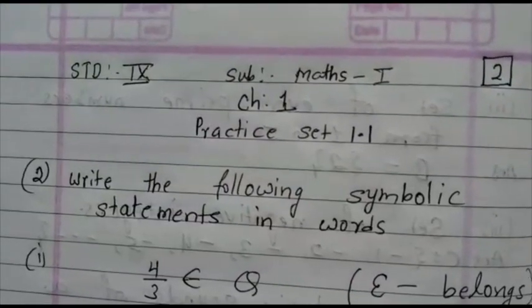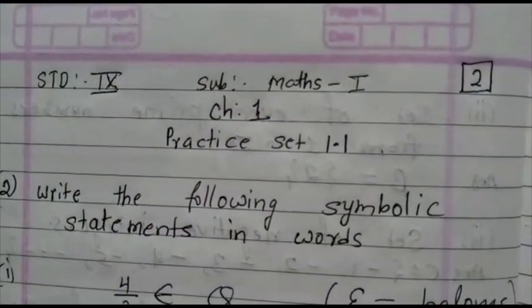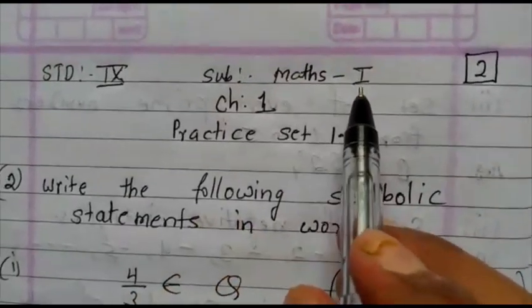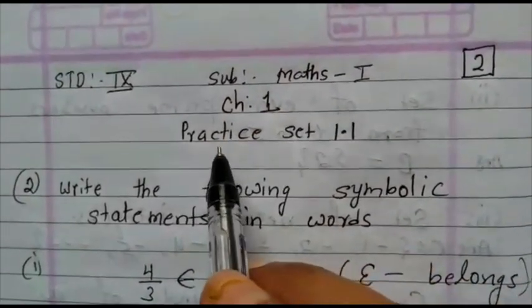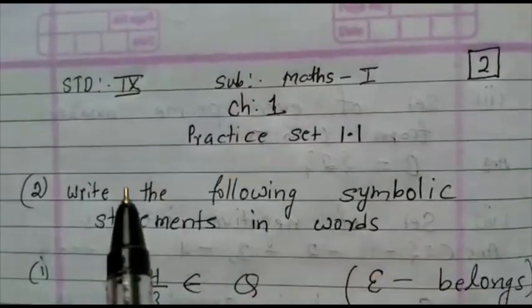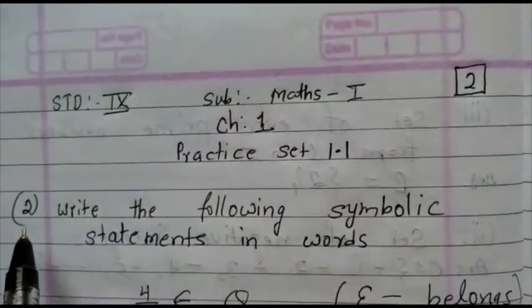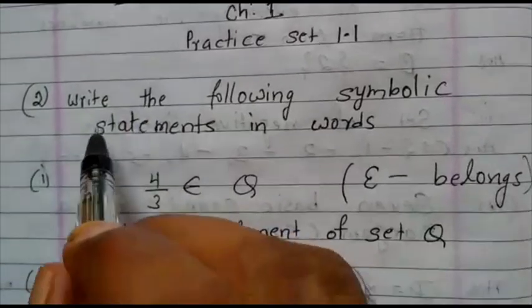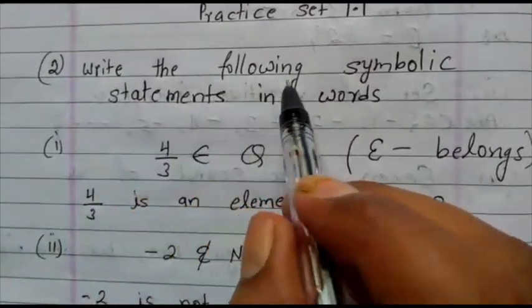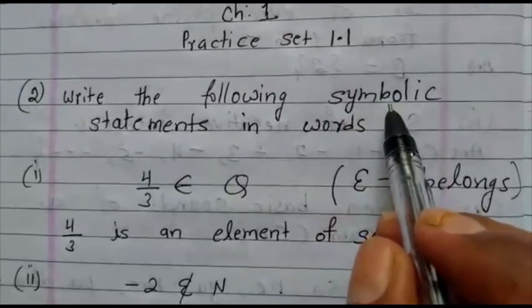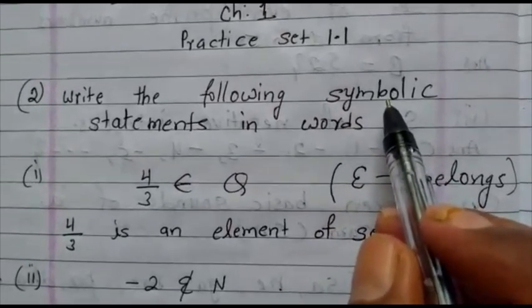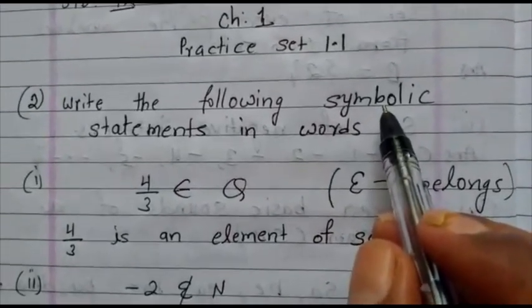I hope you completed your homework. Now Standard 9, Subject Maths 1, Chapter No. 1, Sets. We completed Practice Set 1.1, Question No. 1. Now come to Question No. 2. What is the question here? Write the following symbolic statement in words. Symbolic means symbol is given and we have to write in the statement.